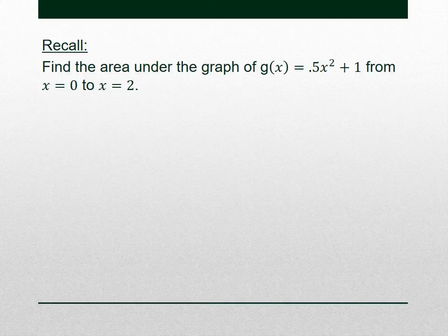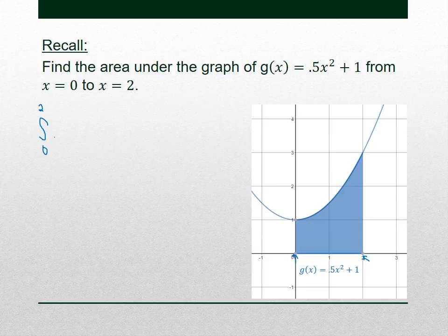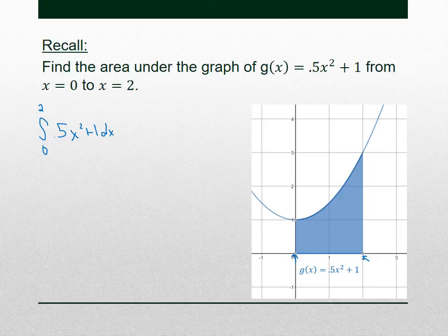Here's another practice from 5.4. We've got the graph of 0.5x² + 1. We want to find the area under the graph — the area between the graph and the x-axis — from 0 to 2, and I've shaded that here in blue. Again, we do that with a definite integral. We're starting at x = 0 and ending at x = 2, so we're going to integrate from 0 to 2 and stick our function in there.